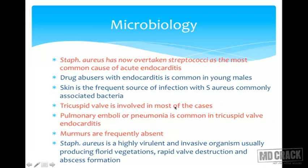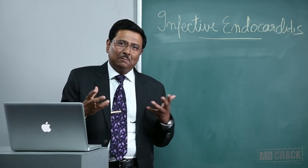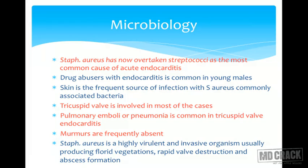Staphylococcus aureus has now overtaken streptococci as the most common cause of acute endocarditis — a very likely MCQ topic. In IV drug abusers with endocarditis, they are commonly young males. Skin is a frequent source of infection, with Staphylococcus aureus being the commonly associated bacteria.